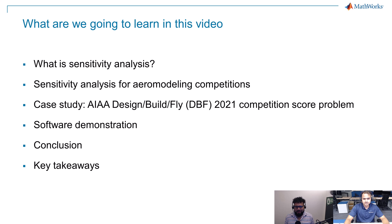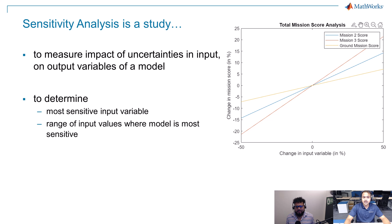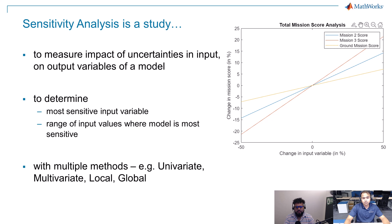Sensitivity analysis is basically a study to measure the impact of uncertainties in input on output variables of a model. It helps to determine the most sensitive input variable and the range of input values where the model will be most sensitive. By getting this understanding, we can design our aircraft or system to achieve the best possible score. Sensitivity analysis is performed with multiple methods, but mostly with univariate, multivariate, and local and global methods. Today we are going to focus on univariate sensitivity analysis to explore the design space.